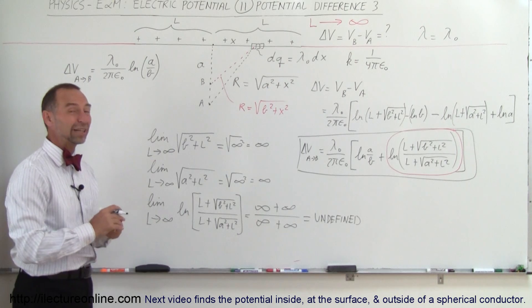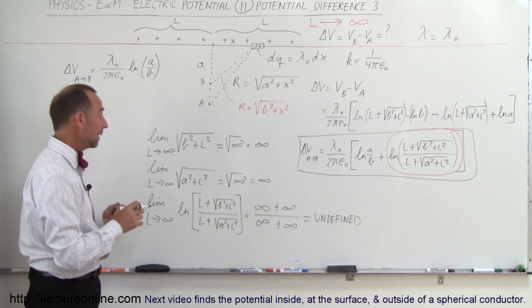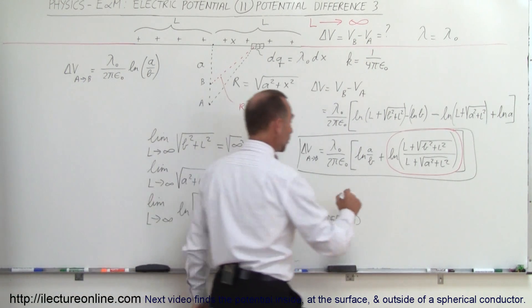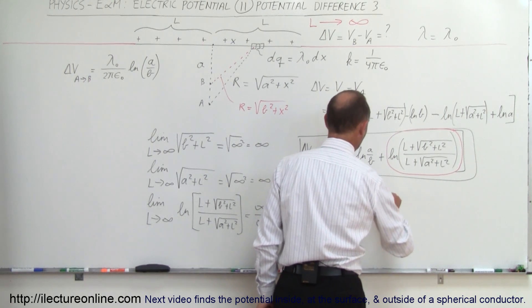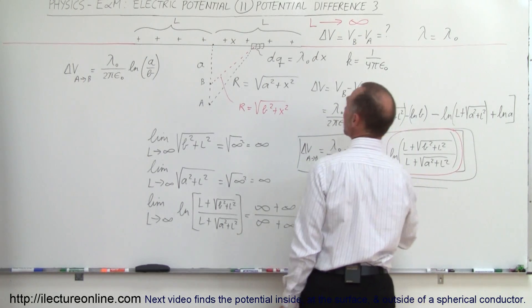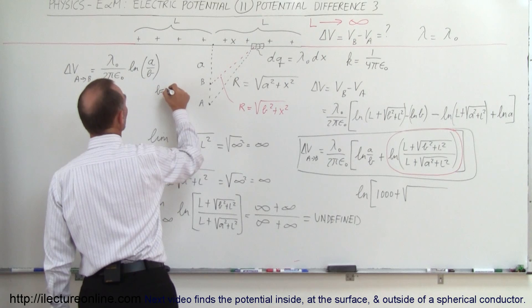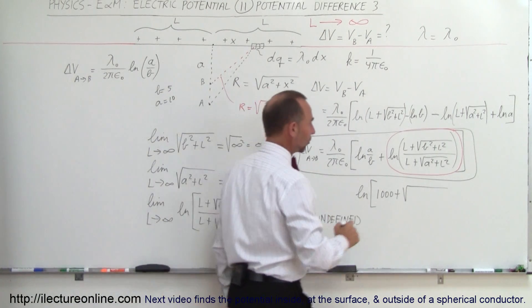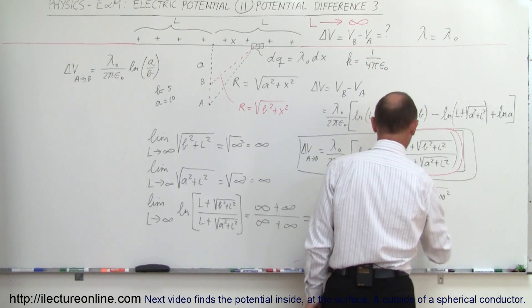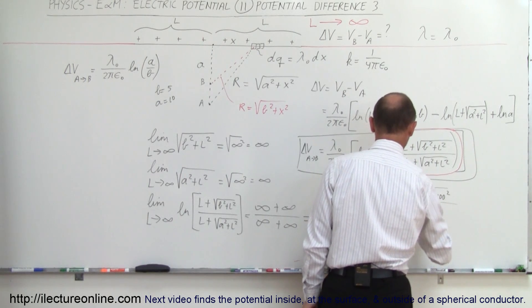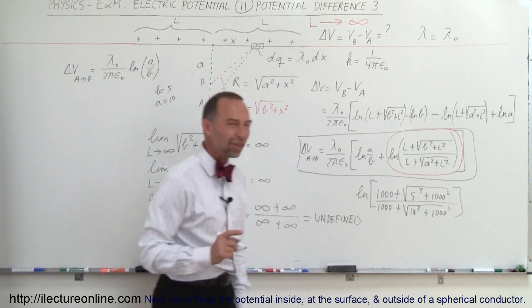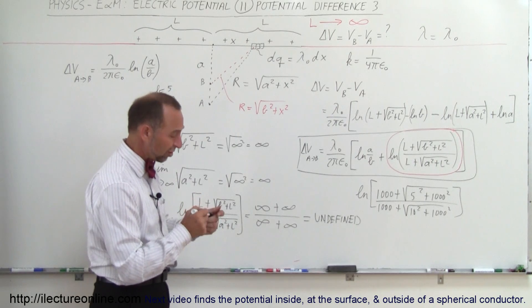But let's take it one step backwards. Let's say, let's not plug in infinity, let's plug in a really big number—let's plug in a thousand, let's plug in a million, let's plug in a billion for L and see what we get. So if we do that, we get the natural log of, let's say, one thousand plus the square root of—let's say that B is equal to 5 and A is equal to 10 in comparison. So let's plug those numbers in.